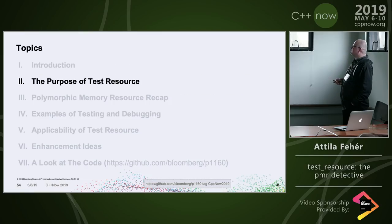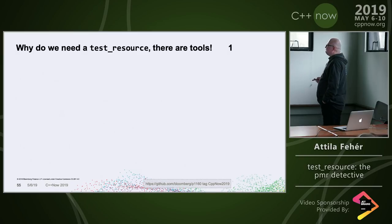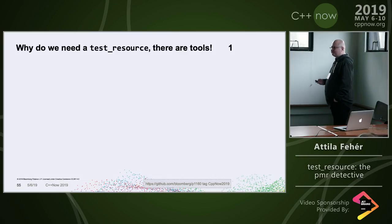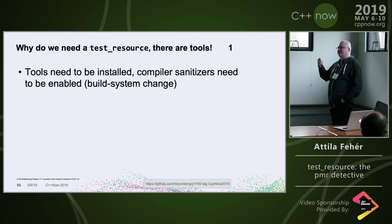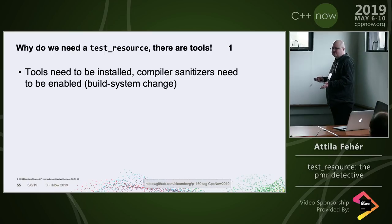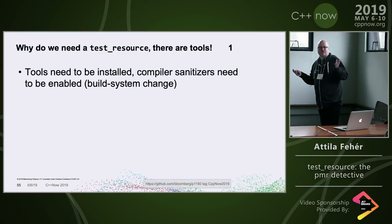Why use test_resource when external tools exist? External tools need to be installed; compiler sanitizers need to be enabled with platform-specific options and build system changes. If you're only on Linux with one compiler, you probably don't care. But if you have to support five platforms with different compilers, test_resource provides a portable, in-process, always-available alternative.